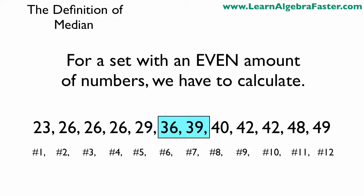But when we have a set with an even amount of numbers, we actually have to do a small calculation. For this example, we have 12 numbers, so we technically have two numbers in the middle of the set. They are 36 and 39.